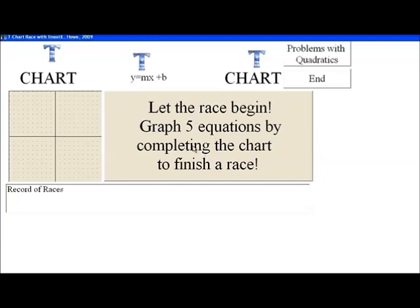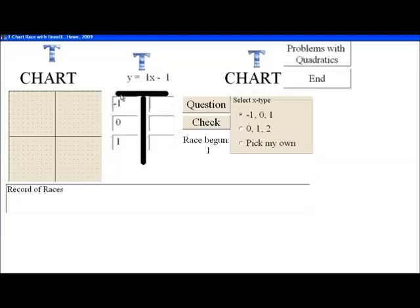So graph five equations by completing the chart to finish a race. And this is a T-chart. Here's an equation. We want to find out what this equation looks like.